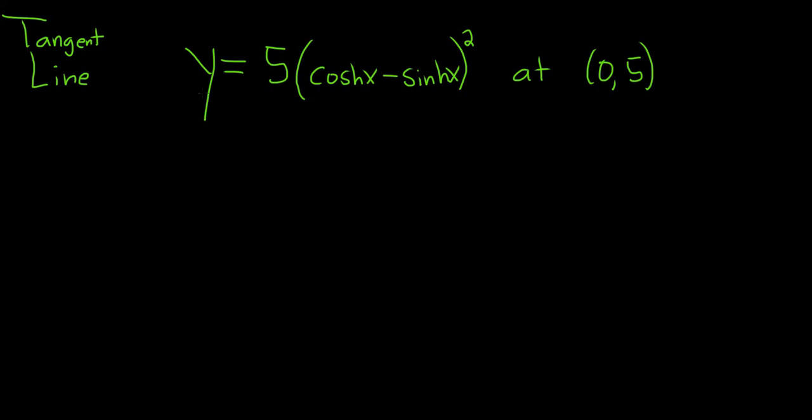Find the equation of the tangent line to the graph of this function at the point (0,5). Solution: To find the equation of the tangent line, we need two things - a slope and a point.